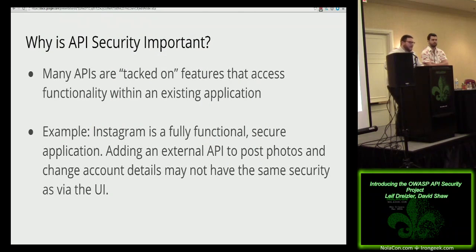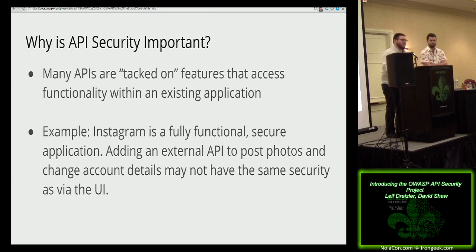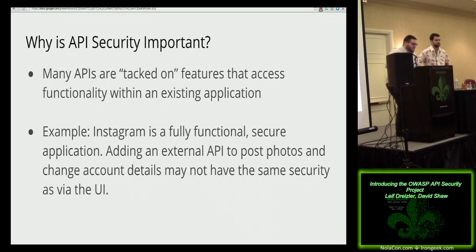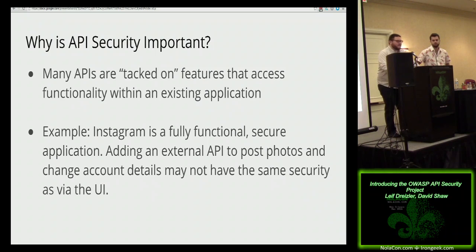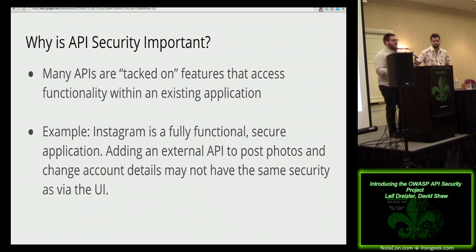Many APIs — especially ones being written as an afterthought of more flagship products from major organizations — don't have the same protection. A different team writes the API later without necessarily the same security controls. For example, Instagram right now is a fairly hardened application, but if you add an external API to post photos or do different tasks, you can basically add security holes. If you're not doing the exact same permissions check that you'd do via the actual application, then you're going to introduce holes while thinking you're just making something easier or opening up your platform.